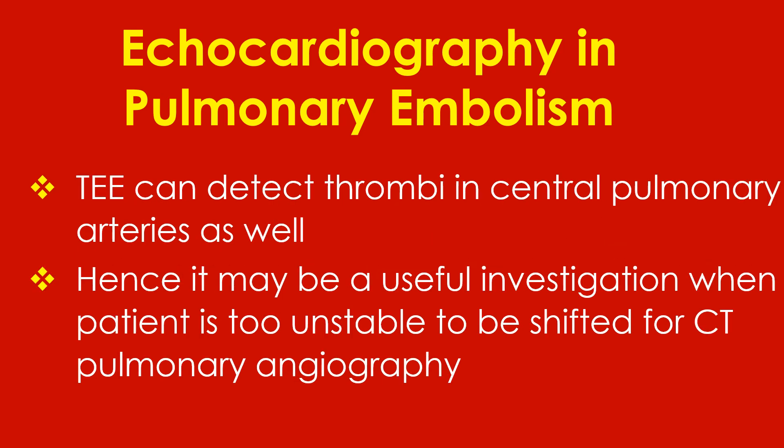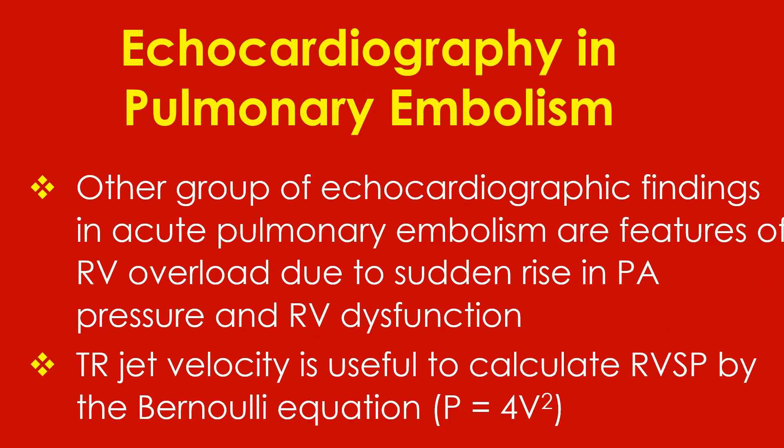Transesophageal echo can detect thrombi in central pulmonary arteries as well. Hence, it may be a useful investigation when the patient is too unstable to be shifted for CT pulmonary angiography. The other group of echocardiographic findings in acute pulmonary embolism are features of right ventricular overload due to sudden rise in pulmonary arterial pressure and right ventricular dysfunction.